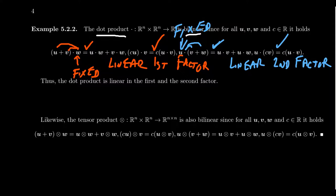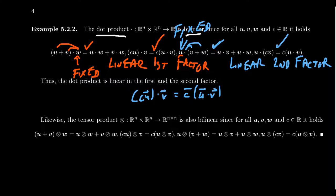The Hermitian product on complex numbers is not exactly bilinear. It does preserve addition in the first and second factor, and it preserves scalar multiplication in the second factor, but it doesn't preserve scalar multiplication in the first factor. For complex numbers, c·u·v equals the complex conjugate of c times u·v, which is not necessarily the original scalar if c is non-real. So we don't say the Hermitian product is bilinear; it's often referred to as being sesquilinear, meaning roughly 'one and a half linear.'